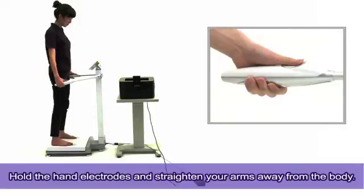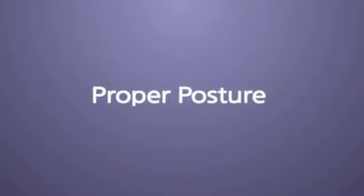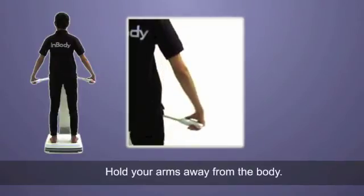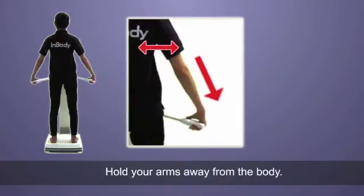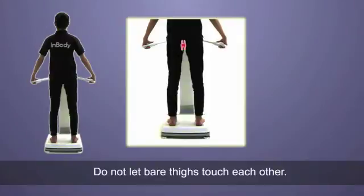Hold the hand electrodes and straighten your arms away from the body. This should be the proper posture. Keep both arms straight. Hold your arms away from the body. Do not let bare thighs touch each other.